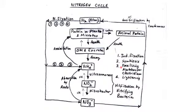The third method involves free-living organisms such as Azotobacter or Clostridium. These organisms do not form a symbiotic relationship, but they still help fix atmospheric nitrogen and convert it into a soluble nitrate form that can be easily taken up by plants along with water.